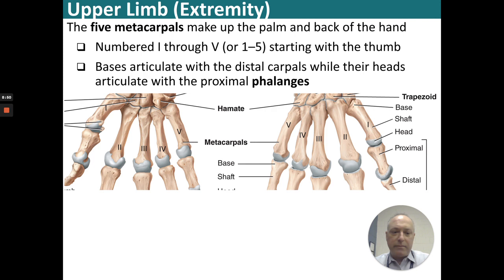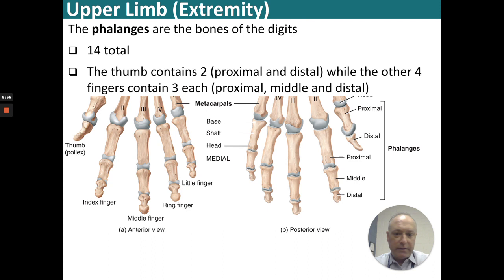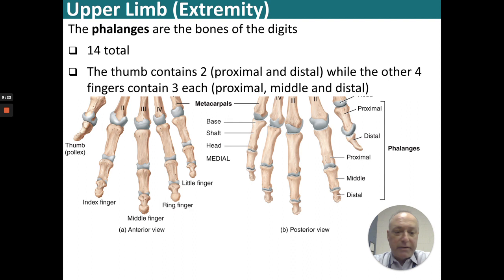Distal to the metacarpals are the phalanges. The phalanges have a proximal, middle, and distal end, except for the thumb — the thumb is missing the middle portion. So it has only proximal and distal phalanges, while the other four fingers have proximal, middle, and distal phalanges.